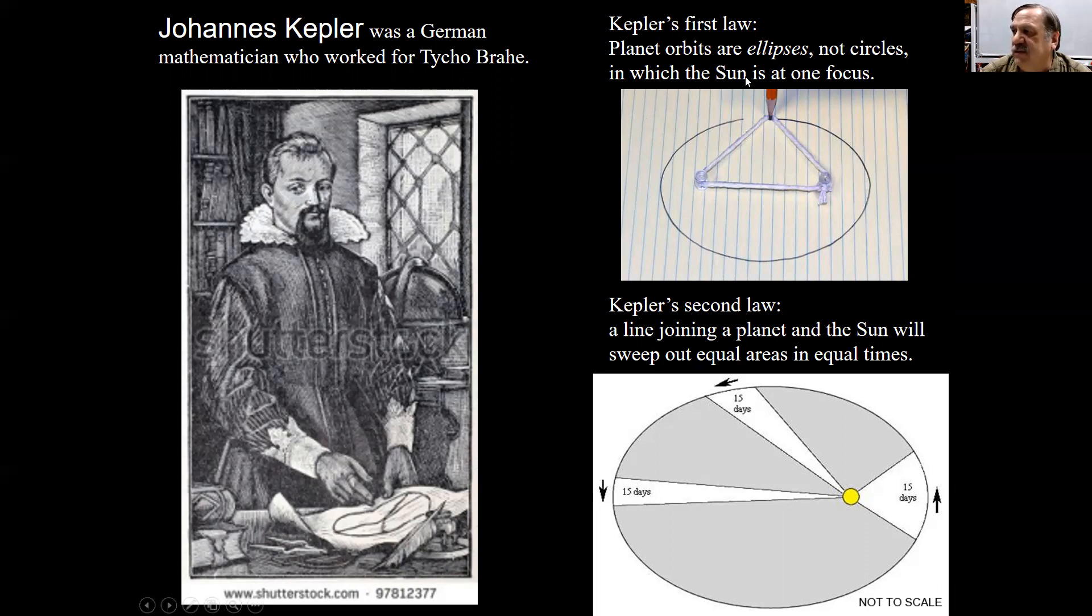Kepler's first law was the planet orbits are ellipses, not circles, in which the sun is at one focus. Put down two thumbtacks and put a pencil in and draw the trace and that gives you an ellipse. A circle is the set of points at the same distance from one point, the center. This is from two. The planets orbit the sun in elliptic orbits, not circles. Totally unexpected. And a direct contradiction of the ancient Greeks who argued that circles were perfect, therefore, the planets had to move around the sun in circles.